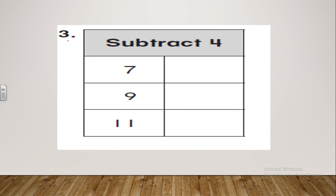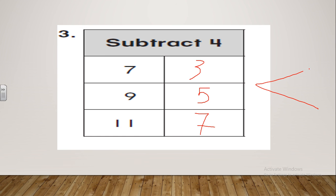Okay, let's see the third question. Now I want you to stop the video and try to solve this question alone, then play the video and compare your answer with mine. I'm sure your answer will be correct. Now stop the video and I will wait for you. Okay baby, welcome back. Here you need to subtract four from each number. Seven minus four — that will be three. What about nine minus four? Excellent, it's five. And eleven minus four? Yeah, that will be seven. Super — you answered all questions correctly. Great job, perfect! Now guys, we've finished our session. I hope you understand the lesson and enjoyed the video. Bye and see you next time, inshallah. Bye!